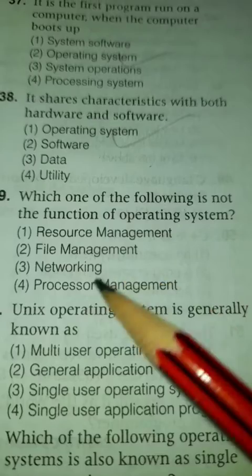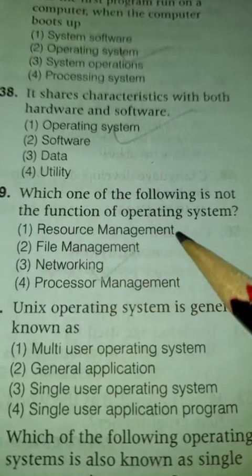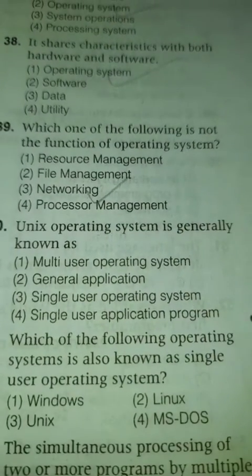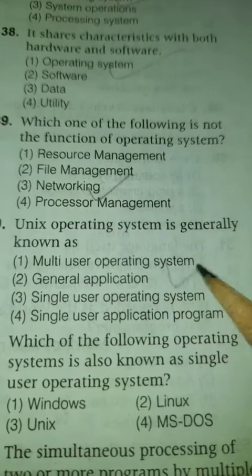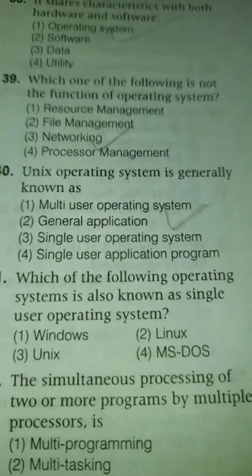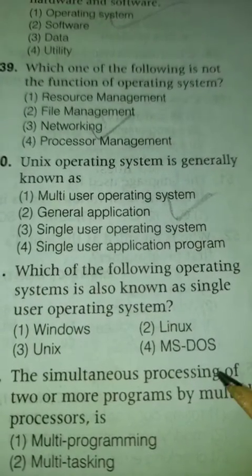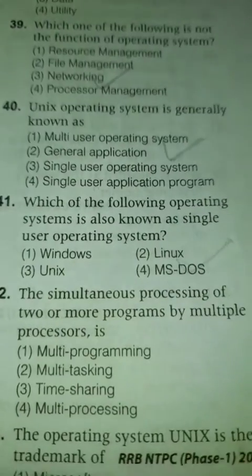Which one of the following is not a function of an operating system? Networking is not a function of the operating system. Unix operating system is generally known as a multi-user operating system. Which of the following is also known as a single-user operating system? MS-DOS.